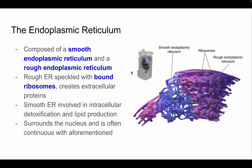Now let's get into the endoplasmic reticulum, which is composed of two different types of reticula: the smooth endoplasmic reticulum and the rough endoplasmic reticulum. The rough ER is speckled with bound ribosomes and creates extracellular proteins. We'll later learn about different types of endocytosis and exocytosis, which will help you understand this further.